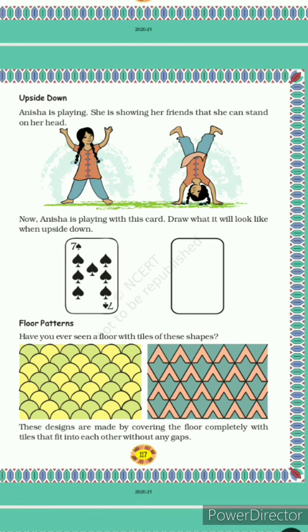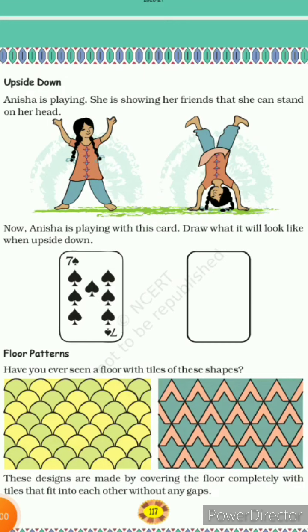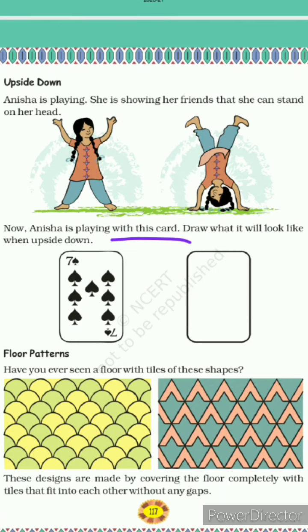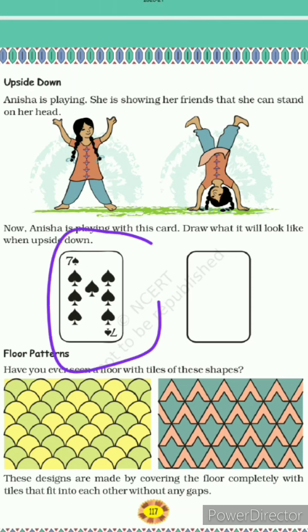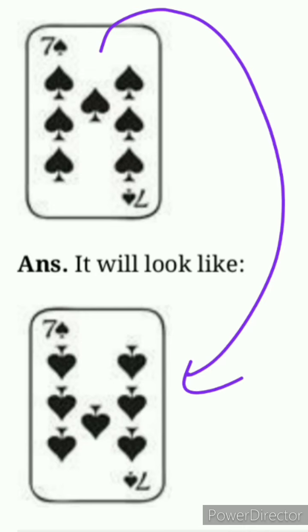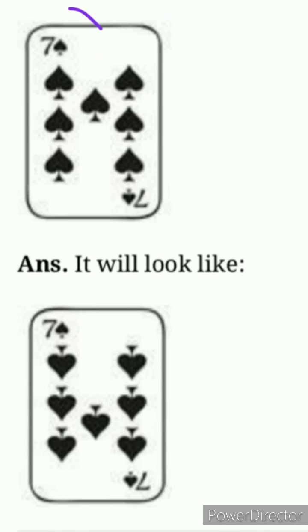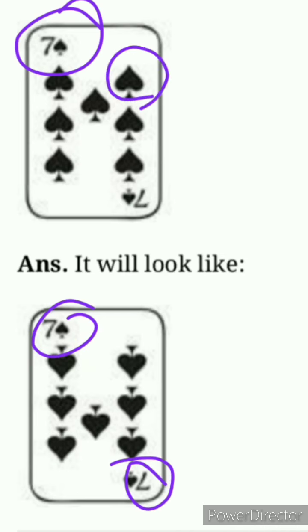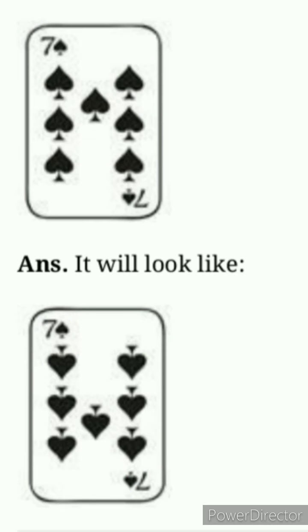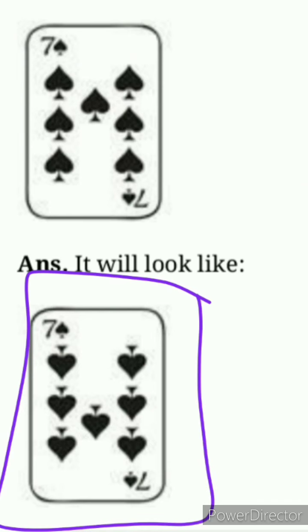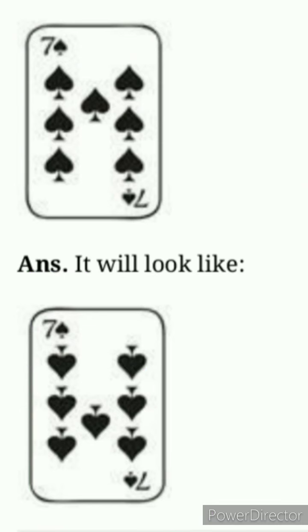Now come to the next page, that is page number 117 — Upside Down. Anisha is playing and she is showing her friend that she can stand on her head. Now Anisha is playing with a card. Draw what it will look like when upside down. Students, here is your answer — jab aap isko rotate karenge, ulta karenge, to aapko yeh card kuch aisa dikhega. Seven aapko as-it-is likhenge, but the heart-shape pattern woh aapka ulta ho jayega. You have to draw it in your book.